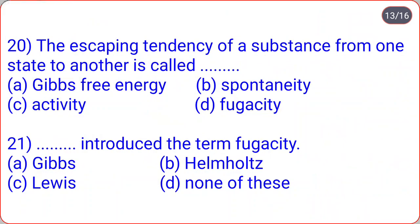The escaping tendency of a substance from one state to another is called fugacity — option D. The term fugacity was introduced by Lewis — that is option C. Remember that Lewis introduced the term fugacity.